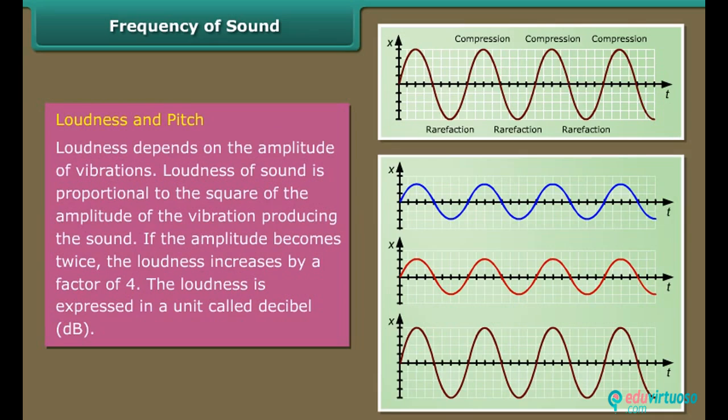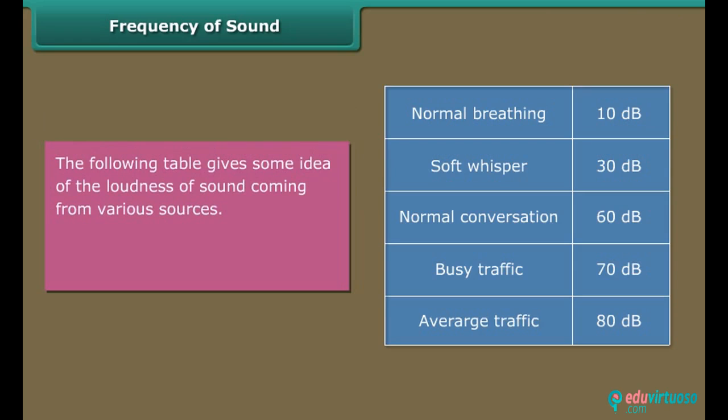Loudness and pitch. Loudness depends on the amplitude of vibrations. Loudness of sound is proportional to the square of the amplitude of the vibration producing the sound. If the amplitude becomes twice the loudness increases by a factor of four. The loudness is expressed in a unit called decibel dB. The following table gives some idea of the loudness of sound coming from various sources. Above 80 dB the noise becomes physically painful.